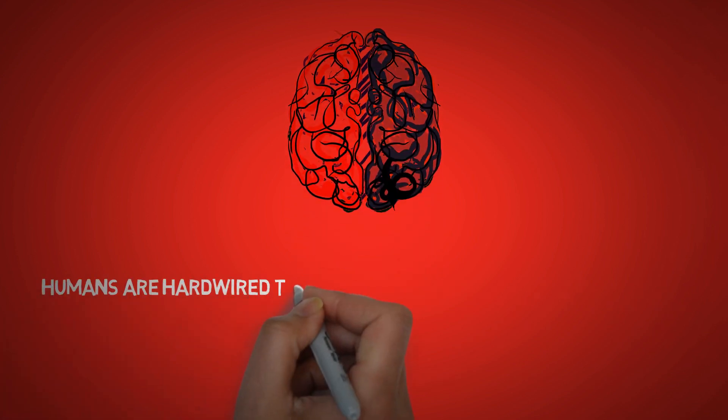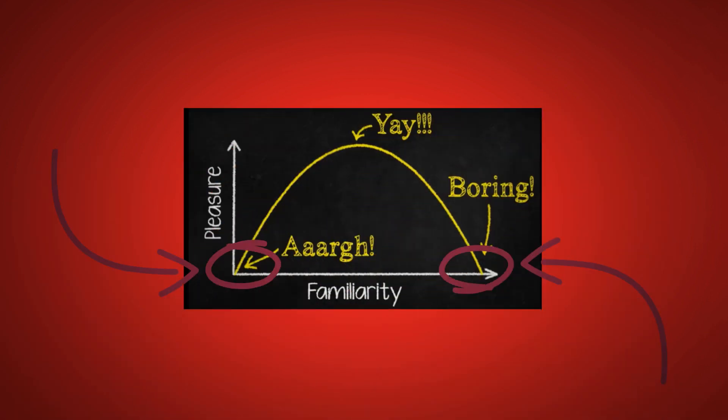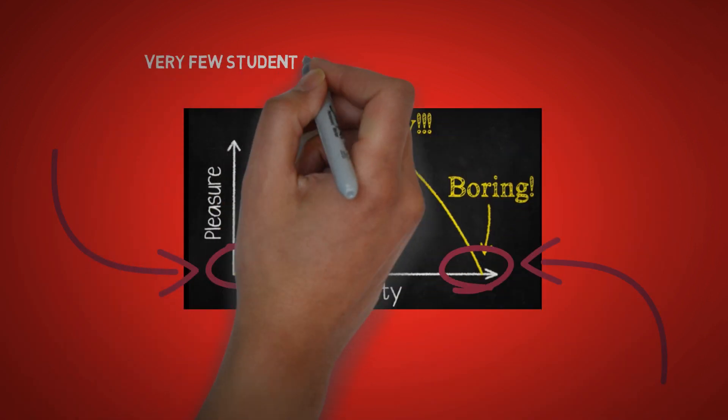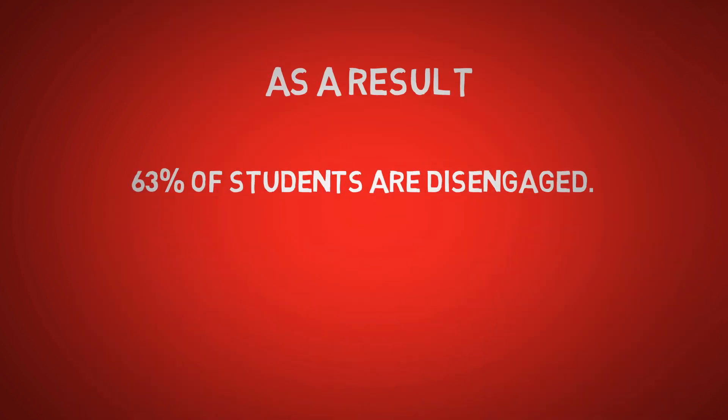So this is how your brain reacts to learning. Consequently, humans are hardwired to find learning extremely pleasurable. And the problem with our current educational system is that most students are either at the beginning or at the end of the curve. Very few students are in the middle of the curve, and as a result 63% of students are disengaged.